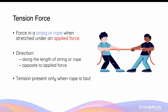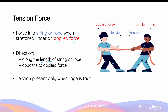The tension force is a force that is present in a string or rope when it is stretched under an applied force. The direction of tension force is along the length of the string or rope — that is, it is parallel to the length of the string or rope — and it is always opposite to the applied force. For example, if two people are pulling on a rope in opposite directions, the applied force is towards themselves. The tension force acts along and is parallel to the rope, but in the opposite direction to the applied force. The applied force by the person on the left is towards the left, so the tension acting on that person is towards the right. Likewise, the applied force by the person on the right is towards the right, and the tension in the rope acts on that person towards the left.